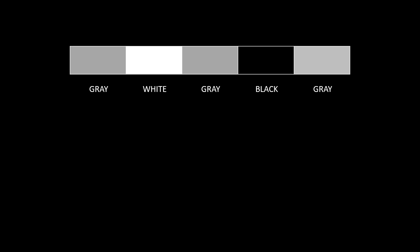This is the case of a one-dimensional Fourier transform. Consider a one-dimensional image — a single row of pixel values — that goes from grey to pure white, back to grey, then to black, and then back to grey. This series represents the variation in pixel intensity across that one-row image.